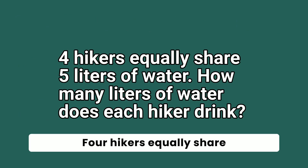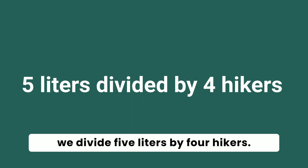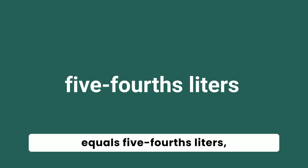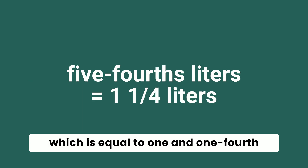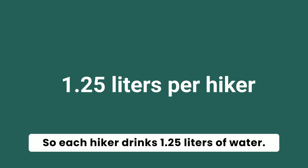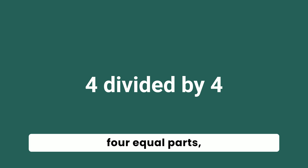Let's do the next problem. Four hikers equally share five liters of water. How many liters of water does each hiker drink? For five liters of water, we divide five liters by four hikers. Five liters divided by four hikers equals five-fourths liters, which is equal to one and one-fourth liters, or one and 25 hundredths liters per hiker. So each hiker drinks one and 25 hundredths liters of water.